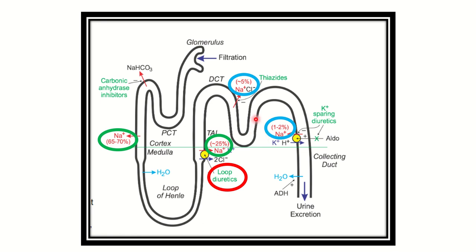To summarize: the proximal convoluted tubule reabsorbs about 70% of sodium; the thick ascending limb of the loop of Henle reabsorbs 25%; the distal convoluted tubule reabsorbs 5%; and the collecting tubule reabsorbs about 1 to 2%.